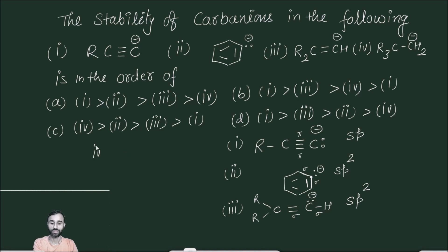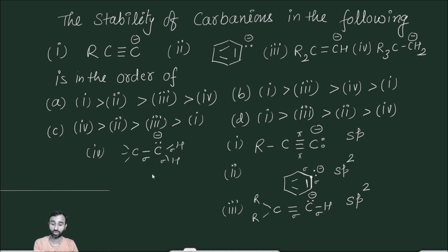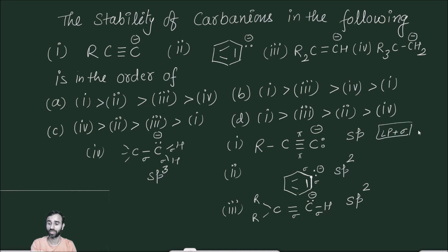Fourth one: in this case (alkane), the carbon which has a negative charge has one lone pair and three sigma bonds — so it is sp3 hybridized. Hybridization is determined by the number of lone pairs plus number of sigma bonds: if that value is 2, it is sp; if 3, it is sp2; if 4, it is sp3.